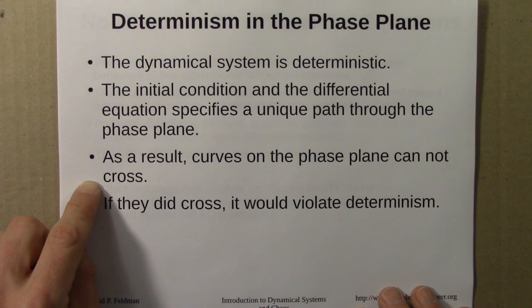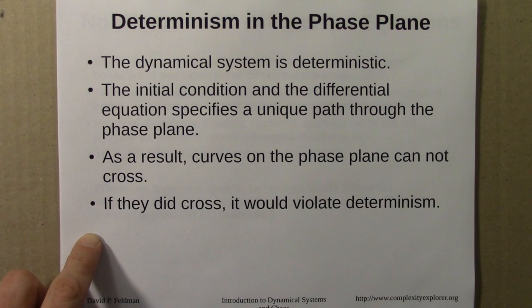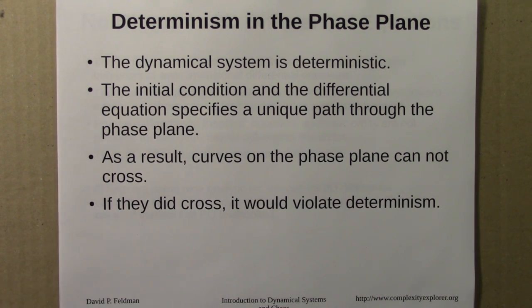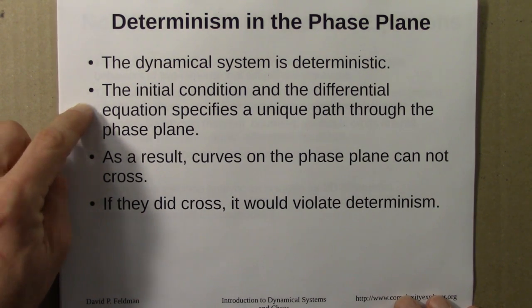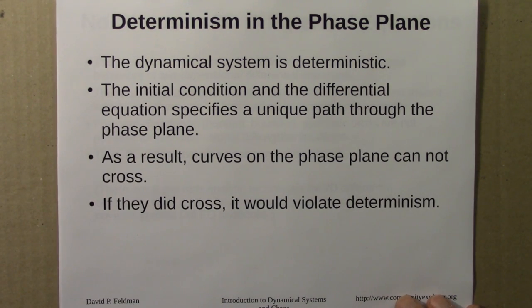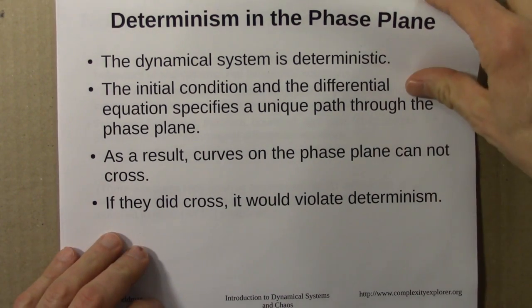And as a result of this, curves on the phase plane cannot cross. If they did cross, it would violate determinism. It would mean that from that point, there would be two possible curves, and that violates this notion of determinism. So solution curves on the phase plane cannot cross each other, and that has some important consequences.